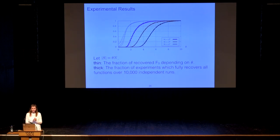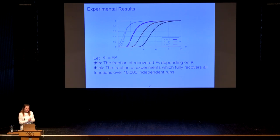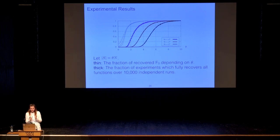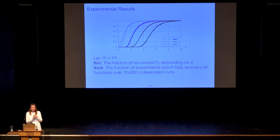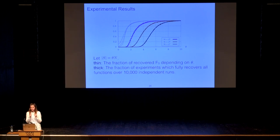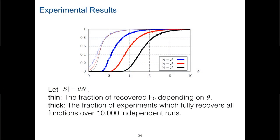The experimental results show that the fraction of recovered F0 entries does not strongly depend on the N value when parameterized by delta. The thick lines show the fraction of experiments — out of 10,000 — that achieve full recovery of all round functions, as opposed to partial recovery. This matches what we theoretically predicted.